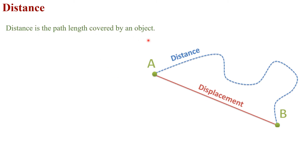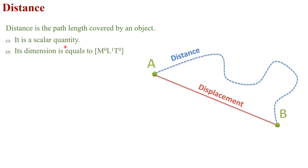Distance is the path length covered by an object. For example, an object covering the path length from point A to point B can cover this path length in any pattern — for example, with the blue color line from point A to B. That blue color path length is the distance. It is a scalar quantity. Its dimensional formula is M⁰L¹T⁰, and its SI unit is meter.